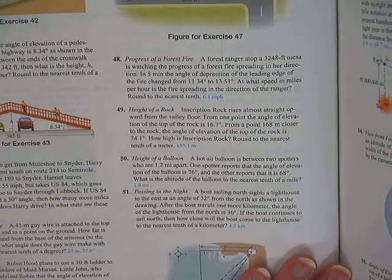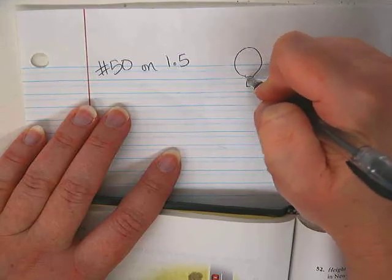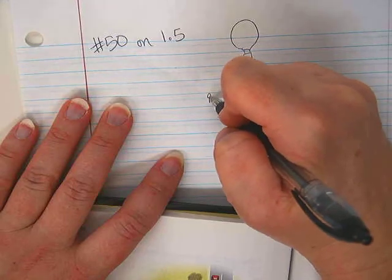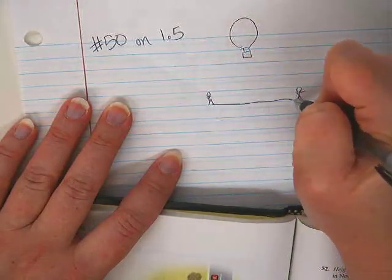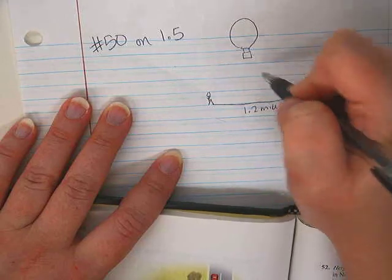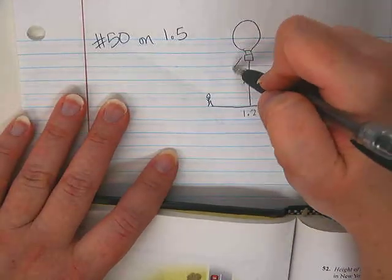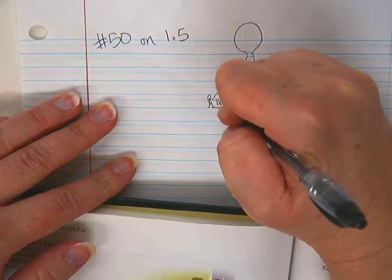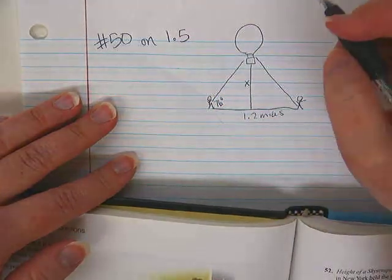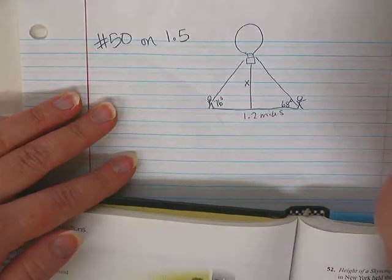A hot air balloon is between two spotters who are 1.2 miles apart. So let's see, we have a hot air balloon and we have a person here and a person over here keeping an eye on it. And between the two people is 1.2 miles. And we want to find the altitude of the balloon, so I'm going to put an X there. And this spotter sees the balloon at a 76 degree angle of elevation, and this one sees it at a 68 degree angle of elevation.